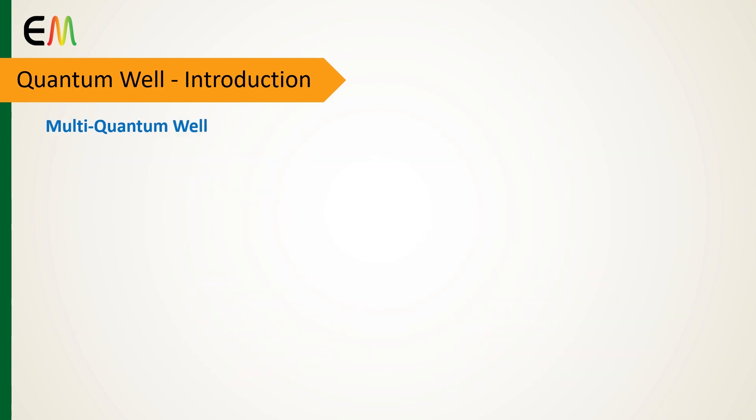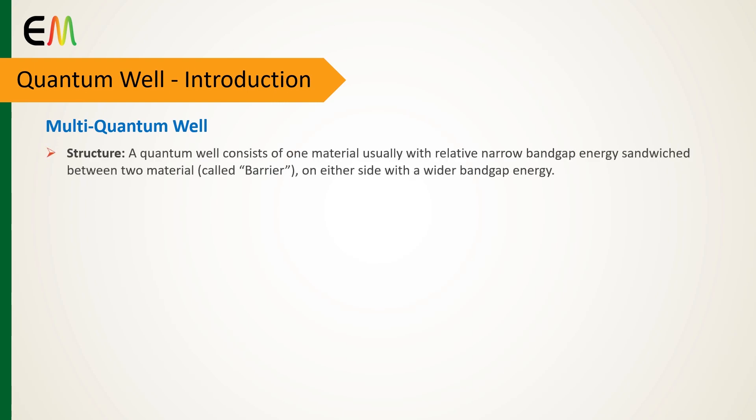A quantum well consists of one material, usually with relatively narrow bandgap energy, sandwiched between two materials called barriers on either side with wider bandgap energy.